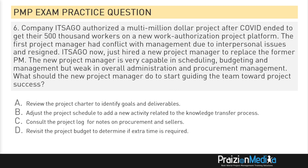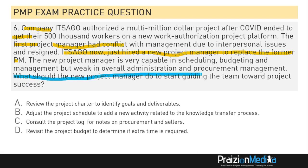As I've heard from a lot of people on the current exam — this is 2022, 2023 — the questions are really long. This question has a lot of detail; it's all story. The first project manager had conflict — that's not so relevant to the question. When you whittle it down, if you're able to master this concept, you'll hone in on the real question: what should a new project manager do to guide the team towards project success?